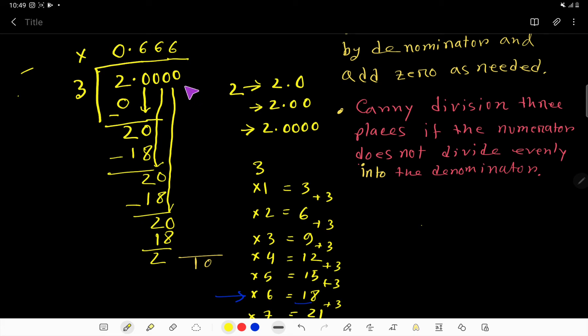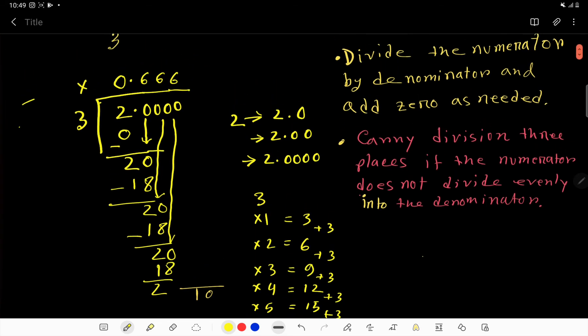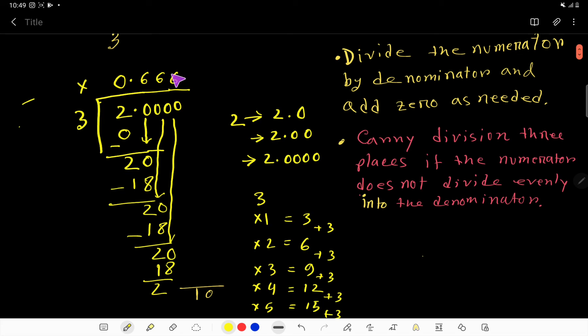You can take any number of zeros and this process will continue. Actually, this 6 is repeating. So you can add here bar.